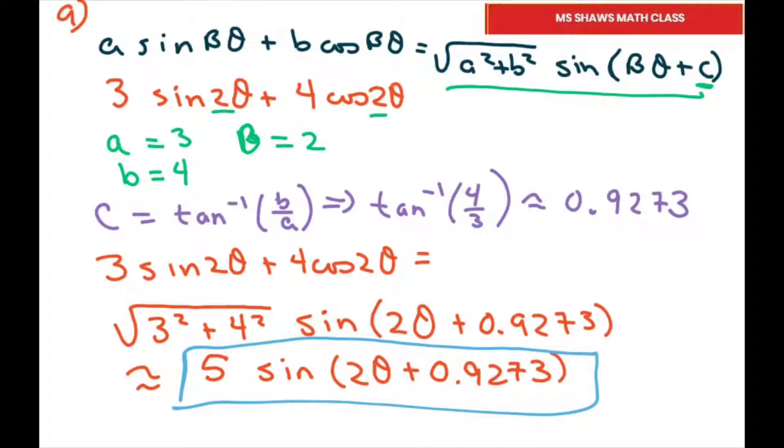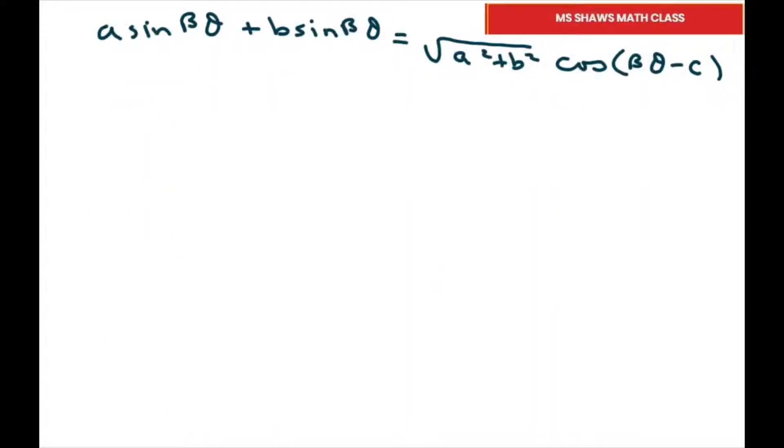Okay. Now the second one, we do the same thing, except we have this minus C and it's cosine. So we have 3 sine of 2 theta plus 4 cosine of 2 theta. Same thing.